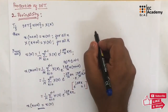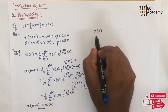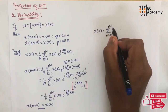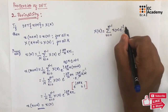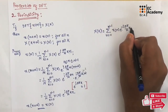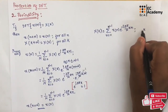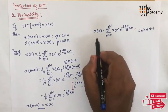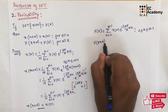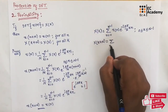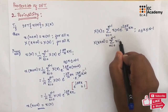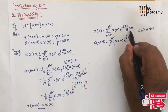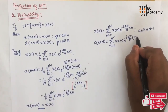Let us take the second equation and prove that. X(k) can be written as summation from n = 0 to N−1 of x(n) · e^(−j2π/N · k · n), for k ranging between 0 to N−1. Now let us take X(k + N).